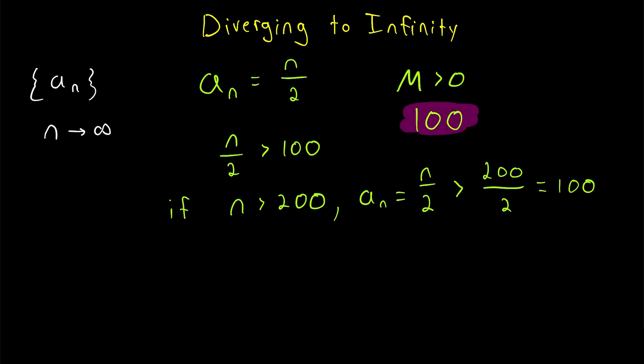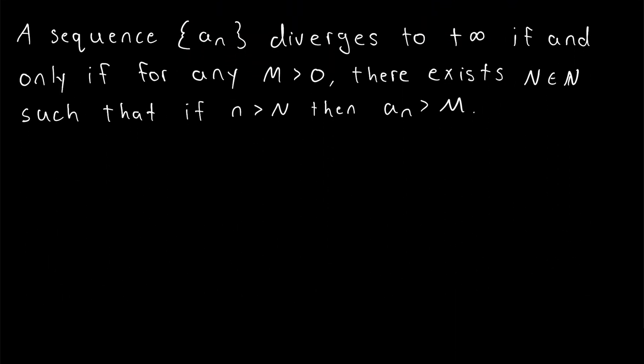you provide me a big number, and I was able to say, after the 200th term in the sequence, all the following terms are greater than 100. And if I can do this with any arbitrarily large M value, that proves that this sequence diverges to positive infinity. So let's take a look at the definition.